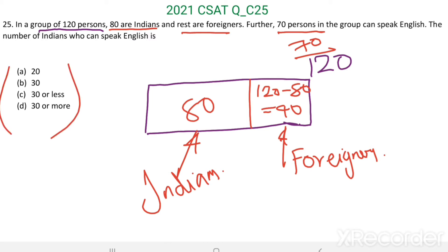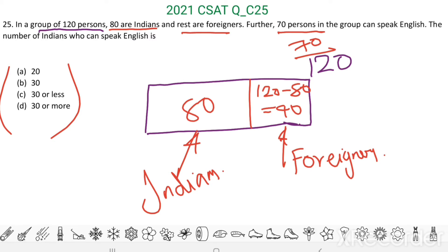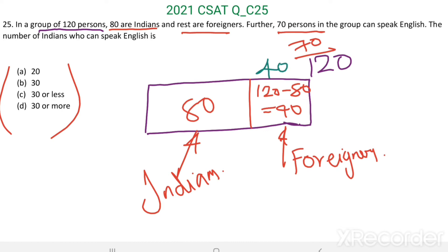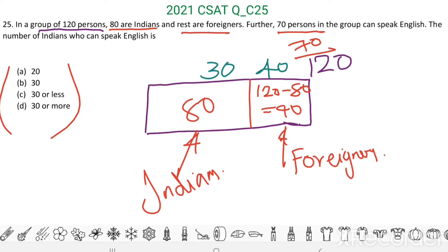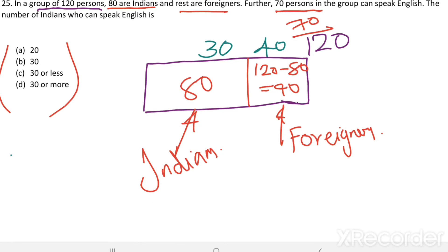If all these 40 foreigners can speak English, then to make it 70, there will be 30 Indians who can speak English. If this is foreigners, this is Indians. If there are 40 foreigners who can speak English, then there will be 30 Indians who can speak English.